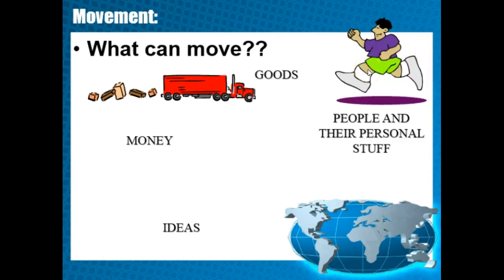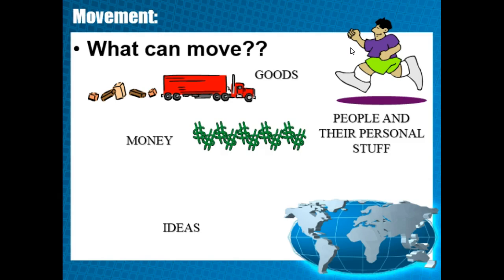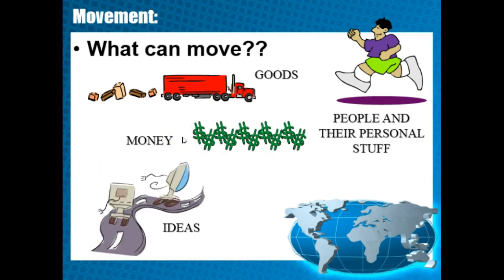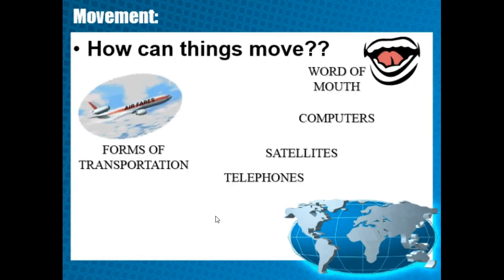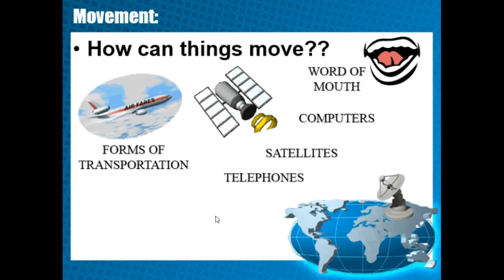Another example is people — when people move on trains or go on airplanes from one country to another, that is an example of movement. Money is also transferred; we've heard about money made in the United States being wired over to Mexico. Ideas also move: technology, software, and the internet play a huge part in the movement of ideas from place to place. That includes culture — that's why we have Chinese buffets or Italian restaurants, because the concept of those things moved into our areas. Things move through transportation, word of mouth, computers, satellites, and telephones.